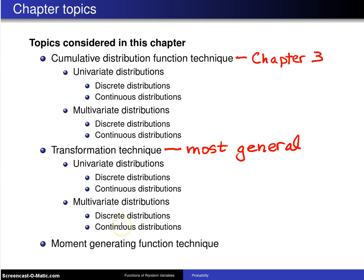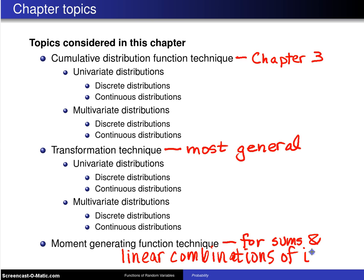Finally, the third of the techniques is known as the moment generating function technique. And this particular technique is used for sums and linear combinations of IID, that is, mutually independent and identically distributed random variables.